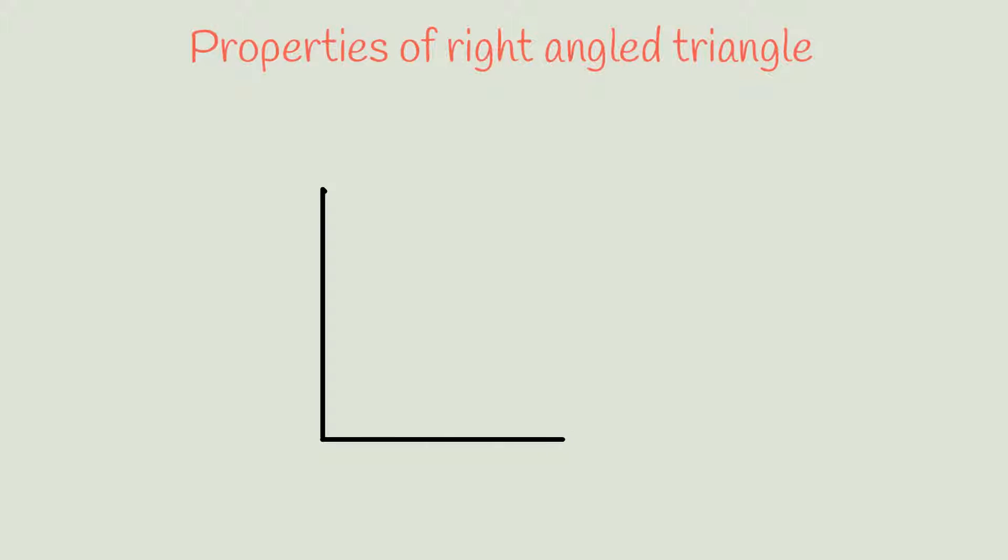In an isosceles right angle triangle, that is, if two sides in the right angle triangle are equal, each acute angle is 45 degrees.